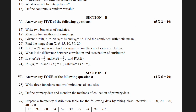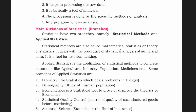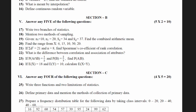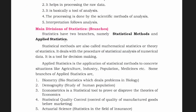The first question is: write the two branches of statistics. This question is often confusing. Read it carefully. In the textbook, it is clearly given that statistics has two branches, namely statistical methods and applied statistics. So the correct answer is statistical methods and applied statistics.